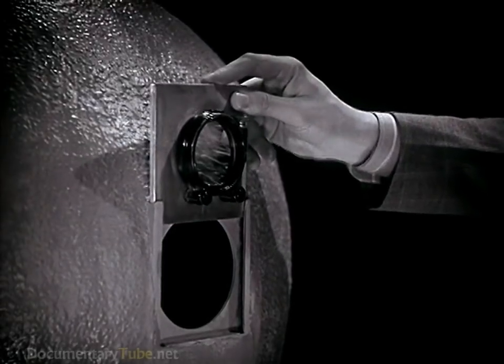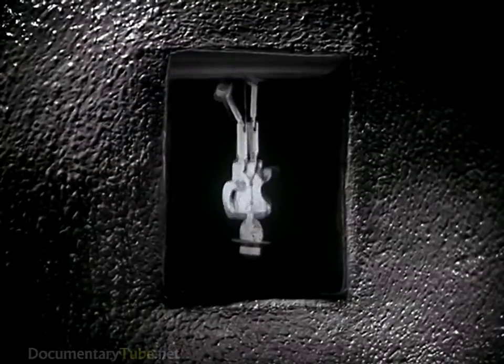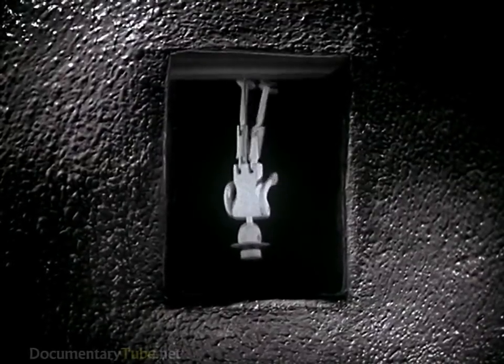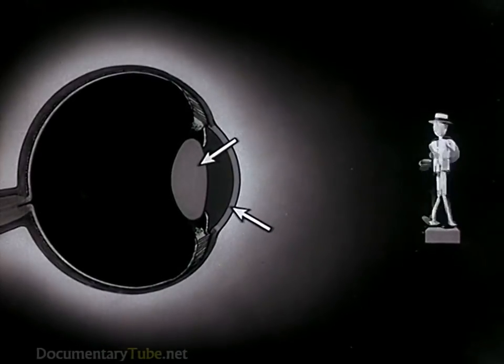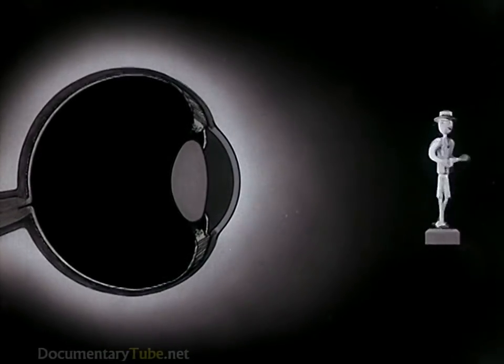But when we put a lens in the camera, rays of light from the object are controlled. They are bent and aimed at correct points on the retina. That is why we have a lens and cornea on the eye to bend or refract the rays.